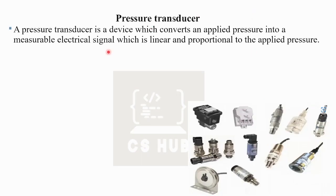What is a pressure transducer? The pressure is detected and an electrical signal is converted. This is a device which converts an applied pressure into a measurable electrical signal, which is linear and proportional to the applied pressure. If we apply the pressure, it will be proportional to the corresponding electrical signal.